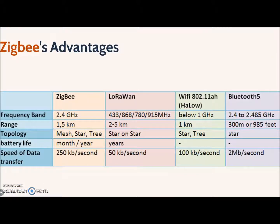What makes Zigbee better than other communication protocols is that it is simpler and cheaper, as mentioned before. It also requires less power, so the battery of Zigbee end devices can operate up to one year for a single use. As shown in this comparison table, Zigbee networking gives more flexibility with several types of topology — you can choose star or mesh networking, which users usually prefer.